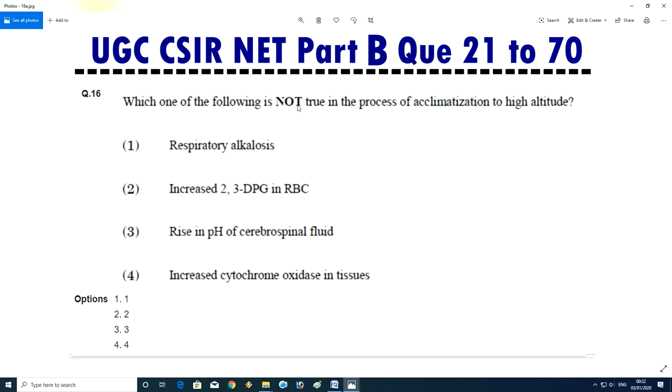Question No.16 - Which of the following is not true in the process of acclimatization to high altitude? Respiratory alkalosis, increase 2,3 DPG in RBC, rise in pH of cerebrospinal fluid, or increase cytochrome oxidase in tissue. Answer is C, rise in pH of cerebrospinal fluid.